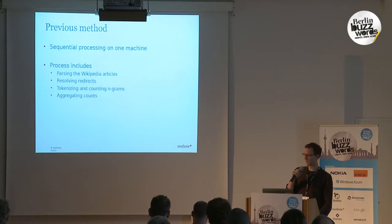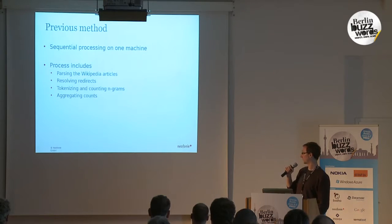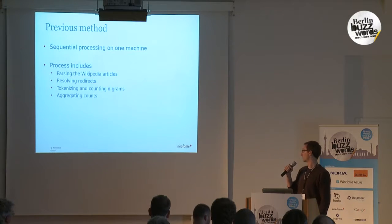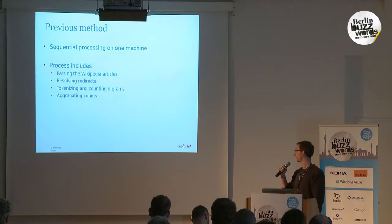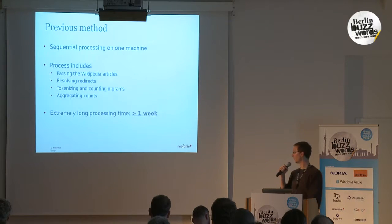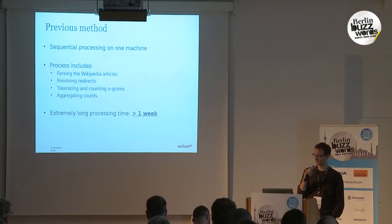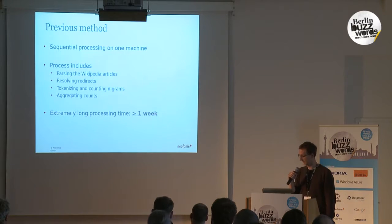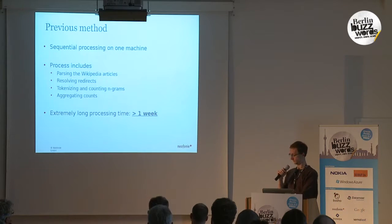At our company we had a method that did exactly that in a sequential way. This process included parsing the Wikipedia articles, resolving redirects, tokenizing and counting n-grams, and aggregating counts. That was all fine, but the big disadvantage was a very long processing time — it took more than a week to process the whole Wikipedia dump, and it was very hard to update and a bit tedious to develop.